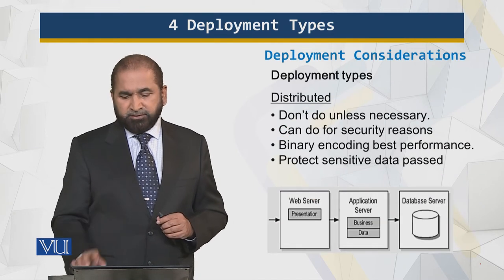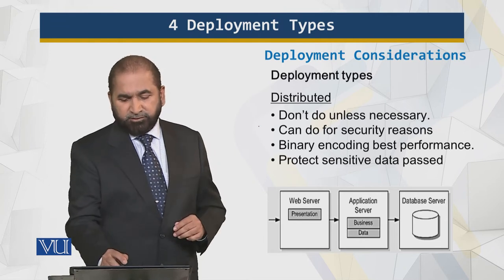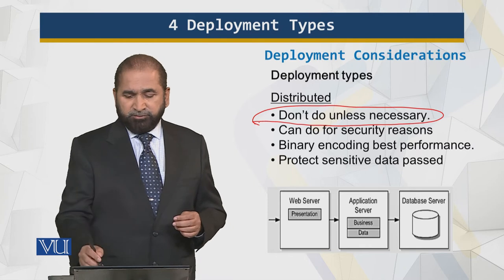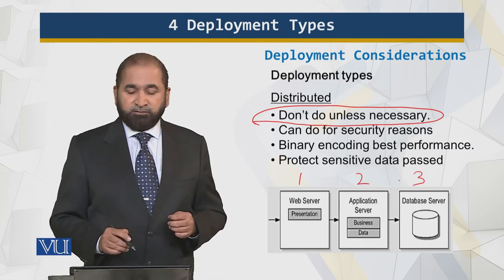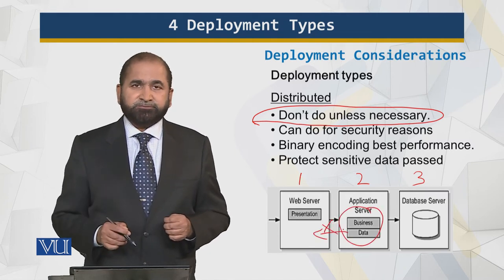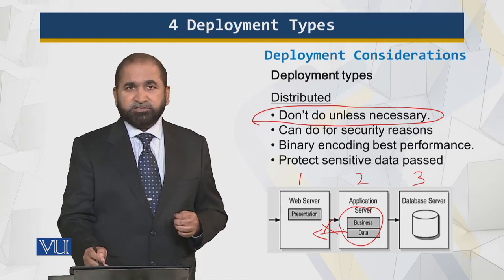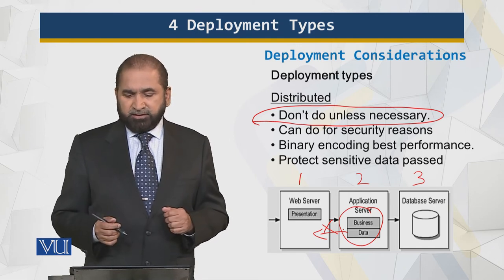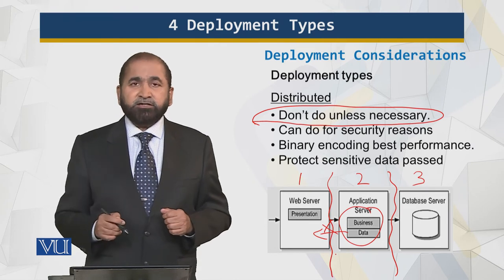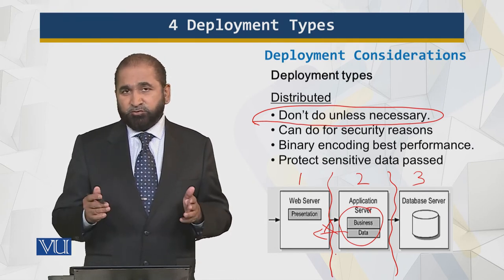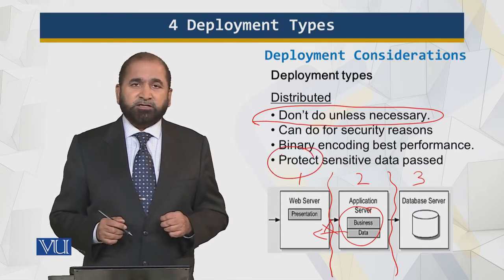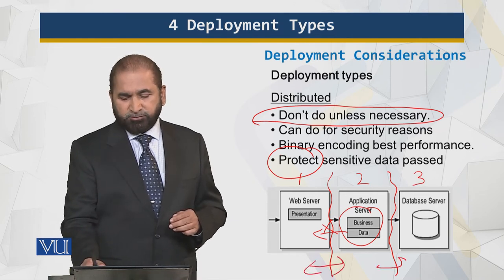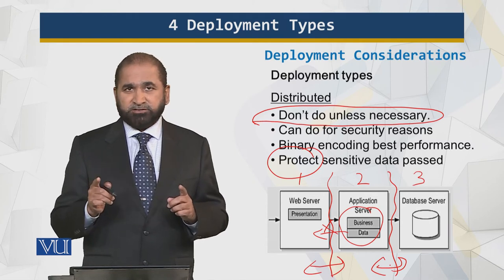Distributed: the key word here is don't do it unless it's necessary, because it has its own issues and its own paradigm. You divide the tiers for security reasons — to enhance security, you use a distributed deployment of your application. At these interfaces, you use binary encoding for best performance, and you need to protect sensitive data being passed. Unlike the non-distributed where data was only passing at one position, now you have sensitive data passing at multiple points.